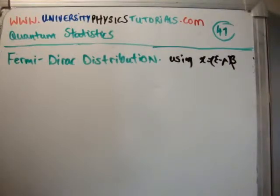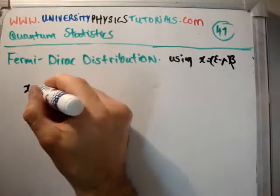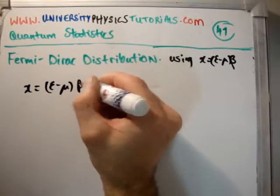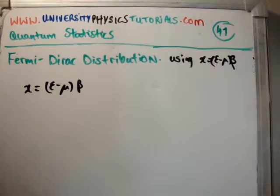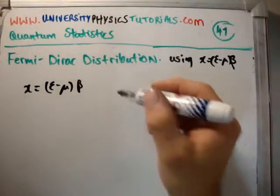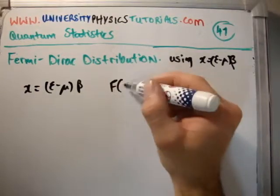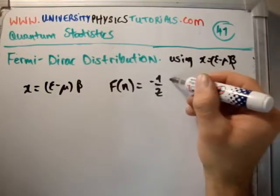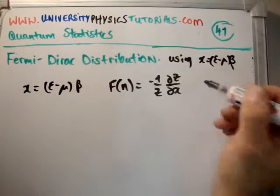In video number 40, I made a substitution that x equals epsilon minus mu times beta. Once I did that, I was able to come up with a formula. The formula said that the occupancy function f(n) was minus 1 over z times del z del x.